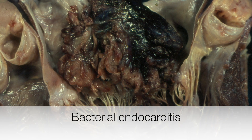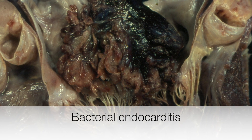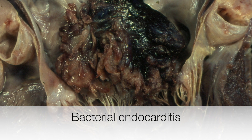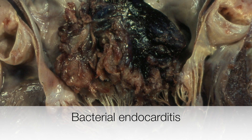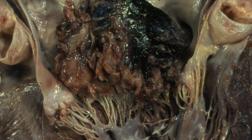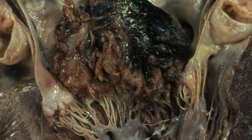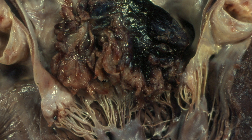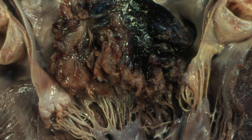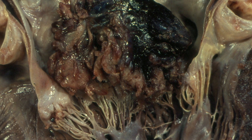Here is an example of vegetations caused by bacterial endocarditis on the mitral valve, and this could spread into the pericardium resulting in purulent pericarditis.